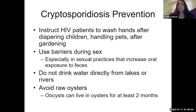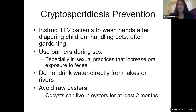Prevention is similar to toxoplasmosis: wash hands after diapering children, handling pets, after gardening; use barriers during sex, especially in sexual practices that increase oral exposure to feces. Don't drink water directly from lakes or rivers, and avoid raw oysters — oocysts can live in oysters for up to a couple of months, so we especially tell our HIV/AIDS patients to avoid raw oysters.